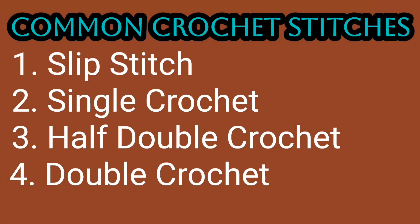Today we're going to be talking about four common crochet stitches: number one being the slip stitch, number two the single crochet, number three the half double crochet, and number four the double crochet. It is very important that you learn these stitches before we begin the crochet process — more often than not, these are going to be the stitches that you see the most in patterns.